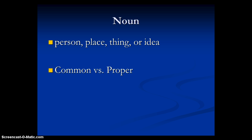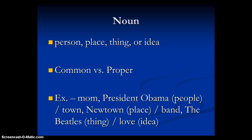We have common and proper nouns. Common are very common words, like street. Proper would be the name of your street. For example: 'mom' is common, but 'President Obama' is proper because we address him formally. 'Town' versus 'Newtown' — Newtown is a specific place. 'Band' versus 'the Beatles' — the Beatles is obviously more specific. The idea of love doesn't really have proper nouns, so it's just common.